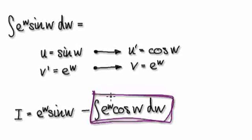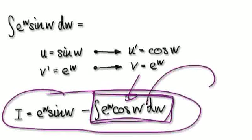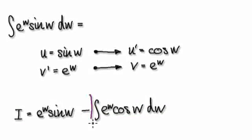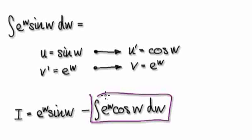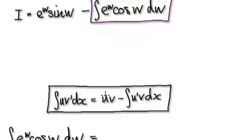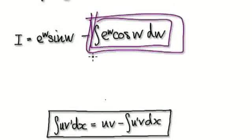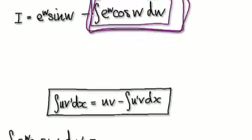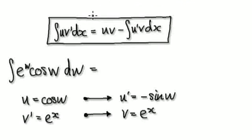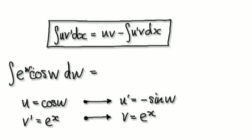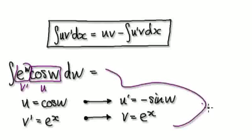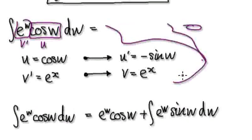Now we need to evaluate this remaining piece here — just this bit here. Later we'll substitute it back. So we're going to use integration by parts again. Let this be u and let this be v prime, then substitute everything in. That will then give you this result.